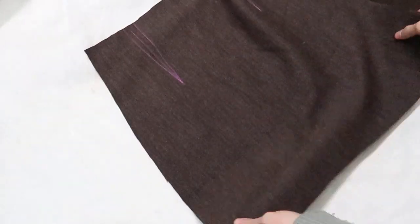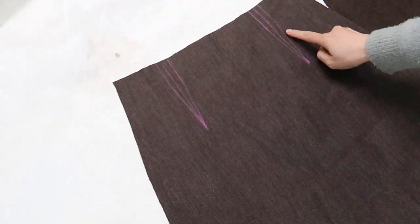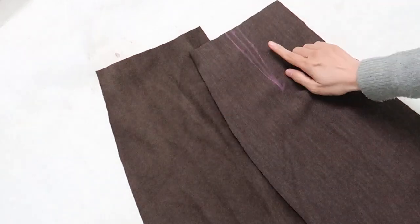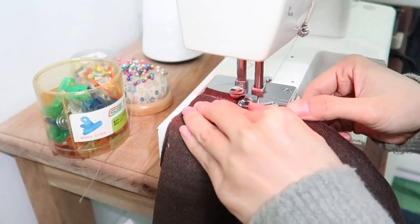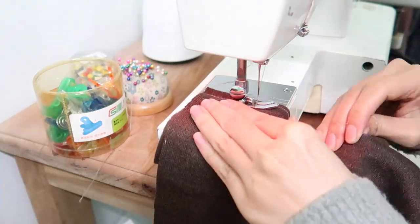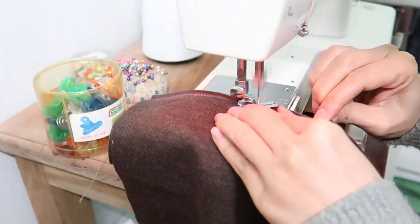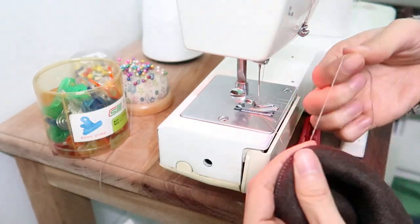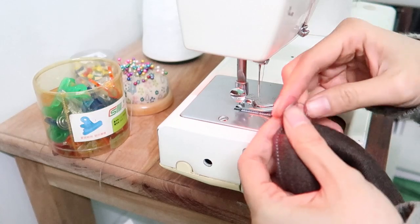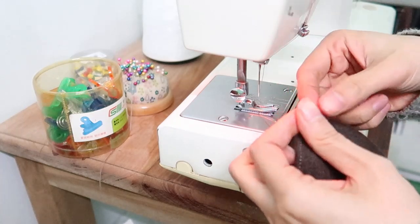Now, I'm starting to stitch the waistband on the front side and also the back side. When finished stitching, remember to leave a distance of threads and tie it up to close it.